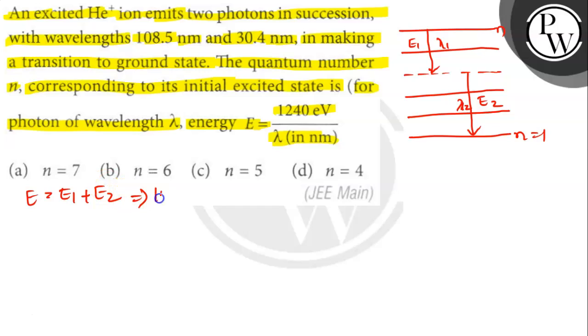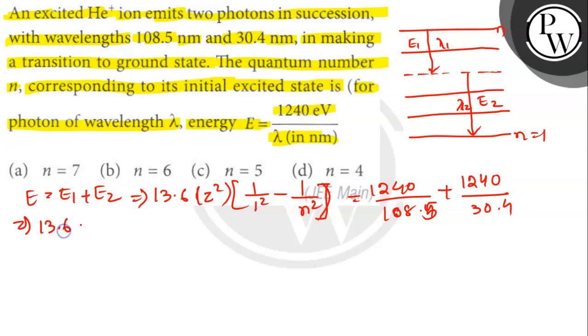So here we will put the values. 13.6 into z square into 1 by 1 square minus 1 by n square. So it will be 1240 divided by 108.5 plus 1240 divided by 30.4. So it will be 13.6 into 4 into 1 minus 1 by n square which is 11.43 plus 40.79.